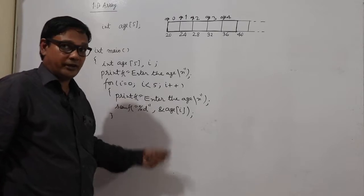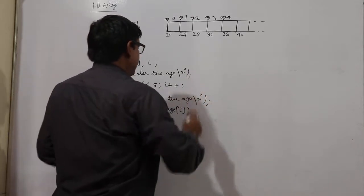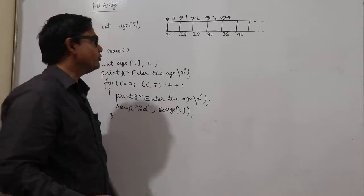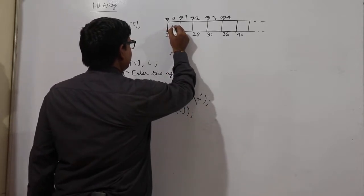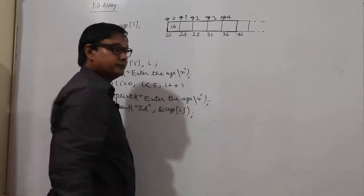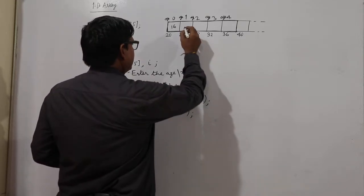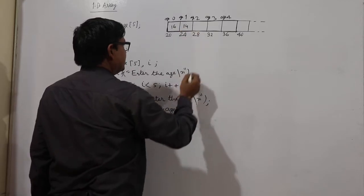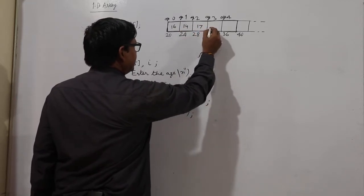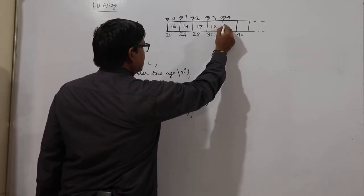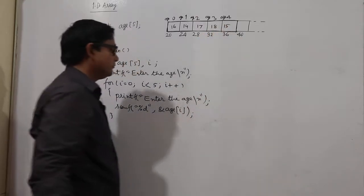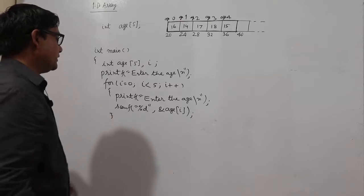Whatever is being input here, for example age 0, some value is input here, for example 16. Age 1, it will be for example 14, next 17, 18, 15. Then I have to display it.